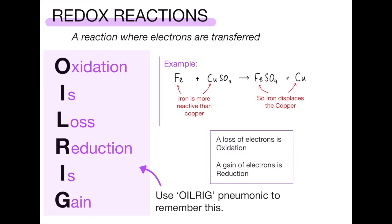Next we have redox reactions, which are simply reactions where electrons are transferred. The name redox comes from reduction and oxidation. A very important mnemonic to remember is OIL RIG: Oxidation Is Loss, Reduction Is Gain — referring to electrons. So a loss of electrons is called oxidation and a gain of electrons is called reduction. This could simply be a definition you need to understand and be able to recite.